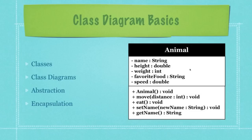A class, as you can see here in this class diagram, is just made up of states on the top and behaviors on the bottom. The states are also known as attributes, fields, or variables. And the behaviors represent what an object can do or what can be done to that object. Behaviors are also known as methods or functions. In the object-oriented world, these are normally known as fields and methods respectively.